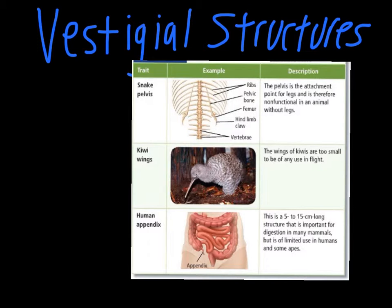Since our diet is now vastly different from that of our ancestors, the appendix has become a vestigial structure for us. These are just three examples — there are many things like this. What this supports is the idea of a common ancestor, since we're inheriting parts that species don't really need anymore, and the idea that species are changing over time in ways that fit their environment. The reason they have these leftover structures is their environment is different from that of their ancestors.